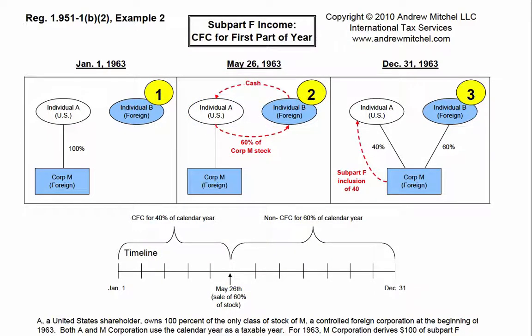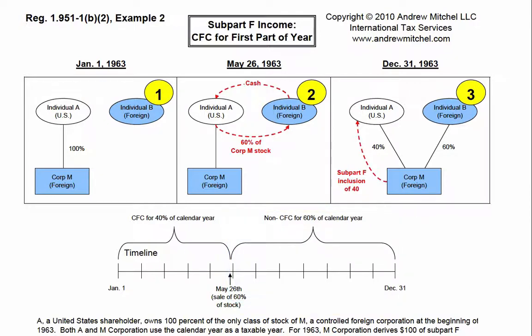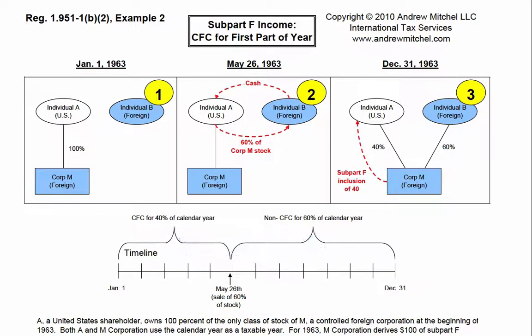After the sale, Corp. M was no longer controlled by U.S. 10% shareholders, and therefore Corp. M ceased to be a CFC on May 26th. Corp. M had $100 of Subpart F income for the current year.